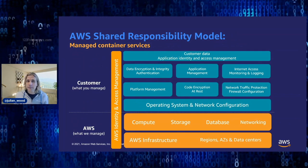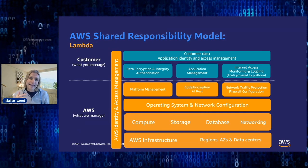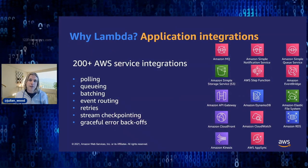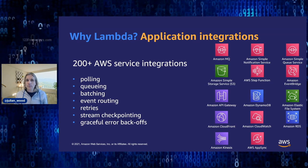We often talk about the AWS shared responsibility model with managed container services — what we manage on your behalf versus what you manage. With managed containers, there's a divide at the OS and network level of the stack. But when you use Lambda, we take on even more of the operational aspect, giving you more time to focus on your business components. Another major differentiator for Lambda is its integrations with other services — more than 200 now — without you having to manage any code or applications. These integrations provide polling, batching, queuing, event routing, and retries, adding maturity to your event-driven applications.